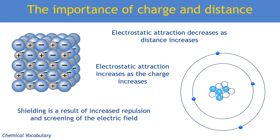There is one other point that is quite important in many areas of chemistry: the idea of electron shielding. When you add extra shells of electrons between the outer electrons and the nucleus, you not only increase the distance between the outer electrons and the nucleus, but you also get an increased repulsive effect because there are more negative charges in between. This screens the electric field, so shielding also reduces the electrostatic forces of attraction. We don't normally have to explain shielding, but we often have to mention it.